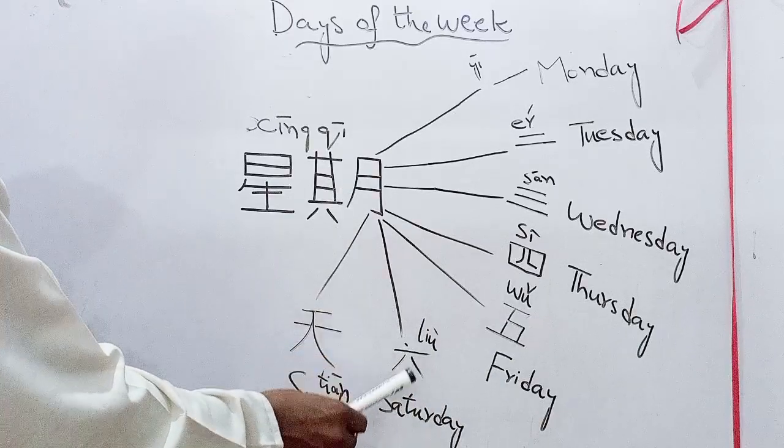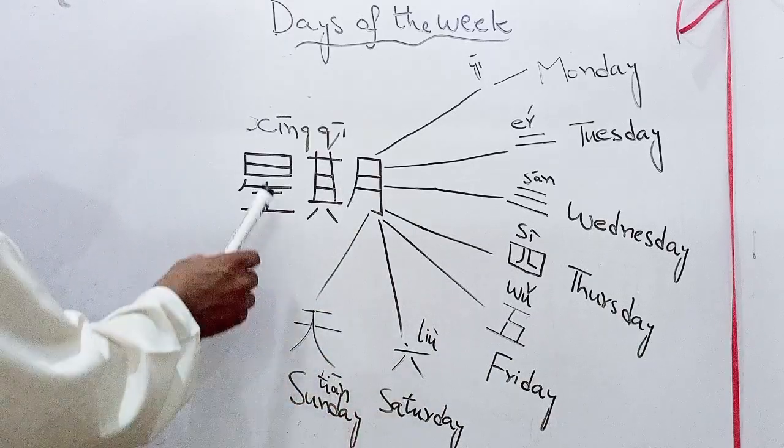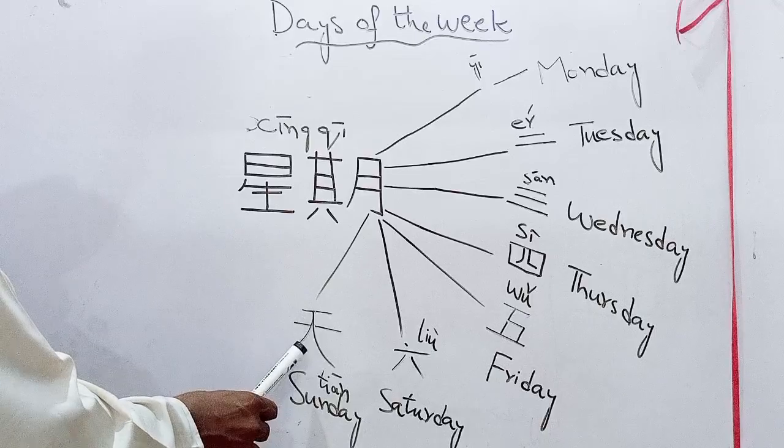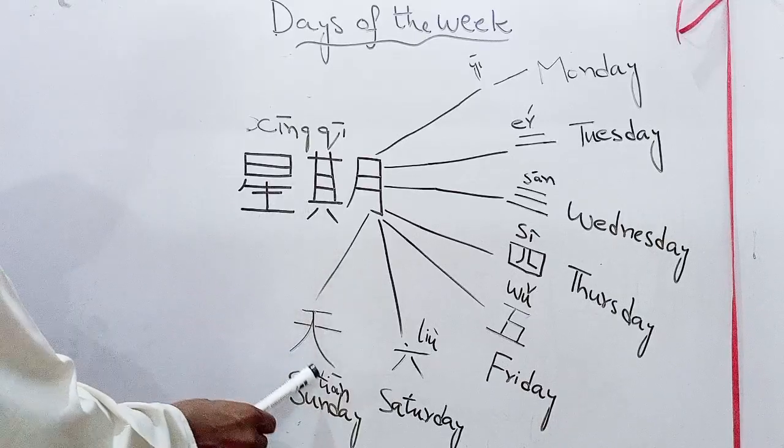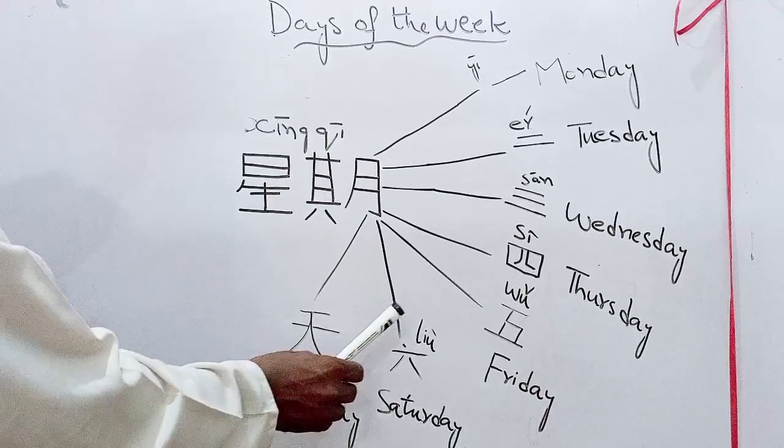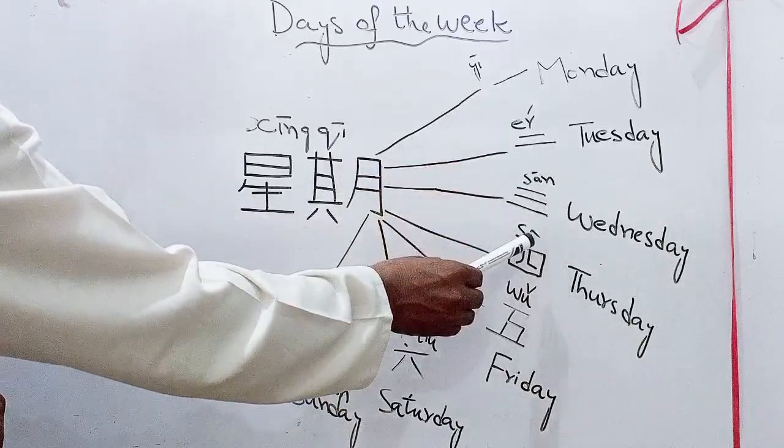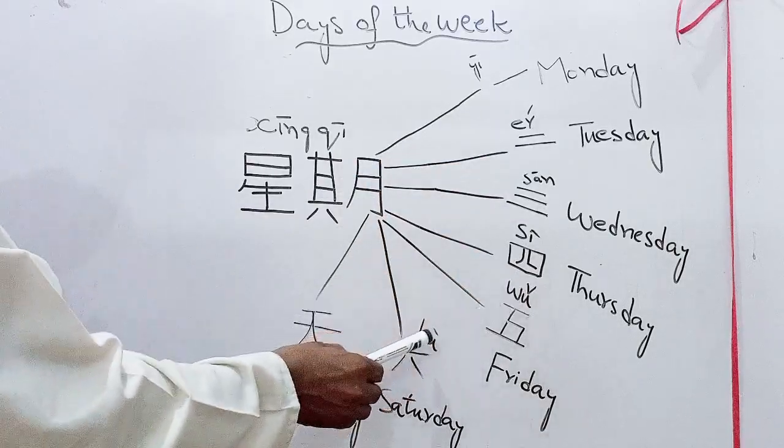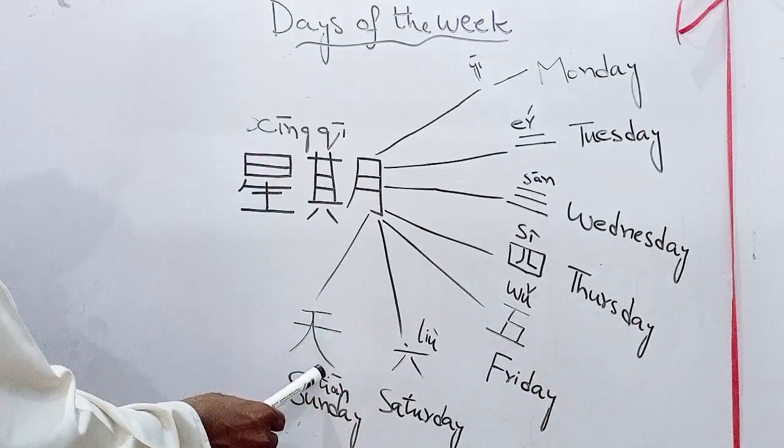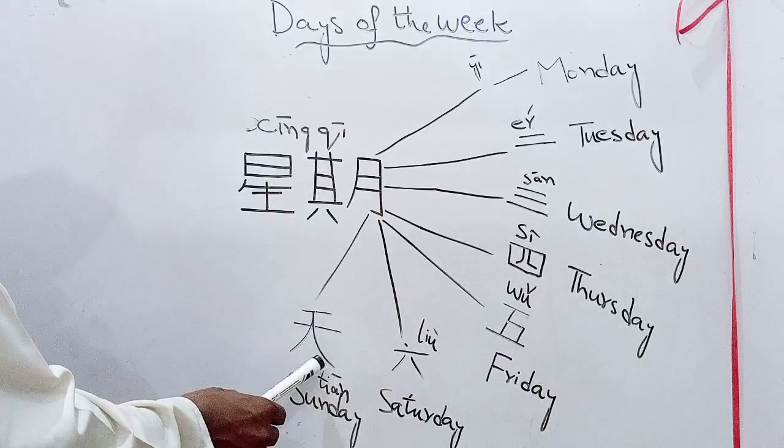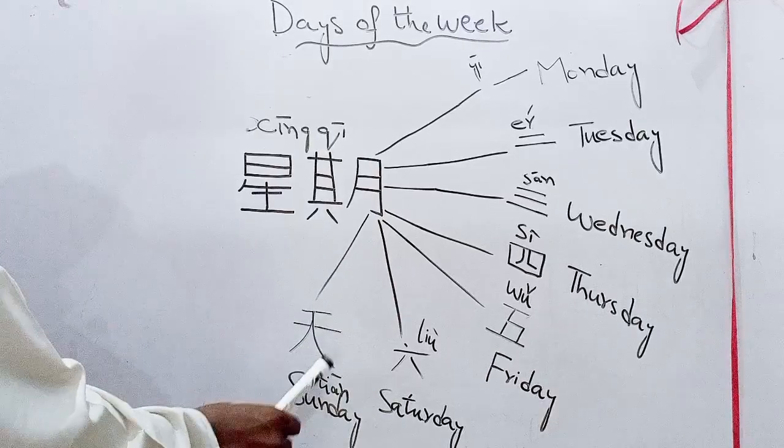Xingqi Liu, Saturday. And Sunday is called Xingqi Tian. And it differs from all the counting. Tian means day and sky.